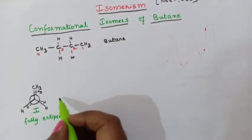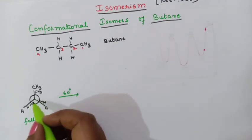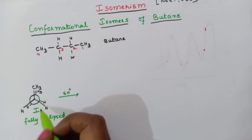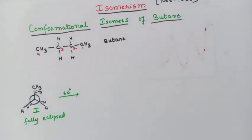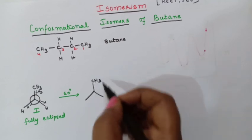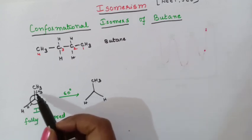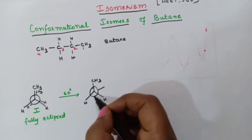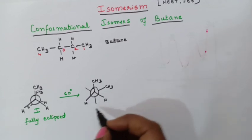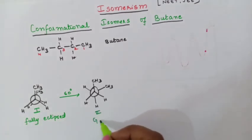Now rotate the back carbon 60 degrees. Keep one carbon as standard — don't rotate it. Only the behind carbon we will rotate to 60 degrees. The front carbon stays as it is with CH3. The back carbon rotates, so the CH3 group comes to a new position with H and H. This structure is called Gauche — structure 2 is called Gauche.